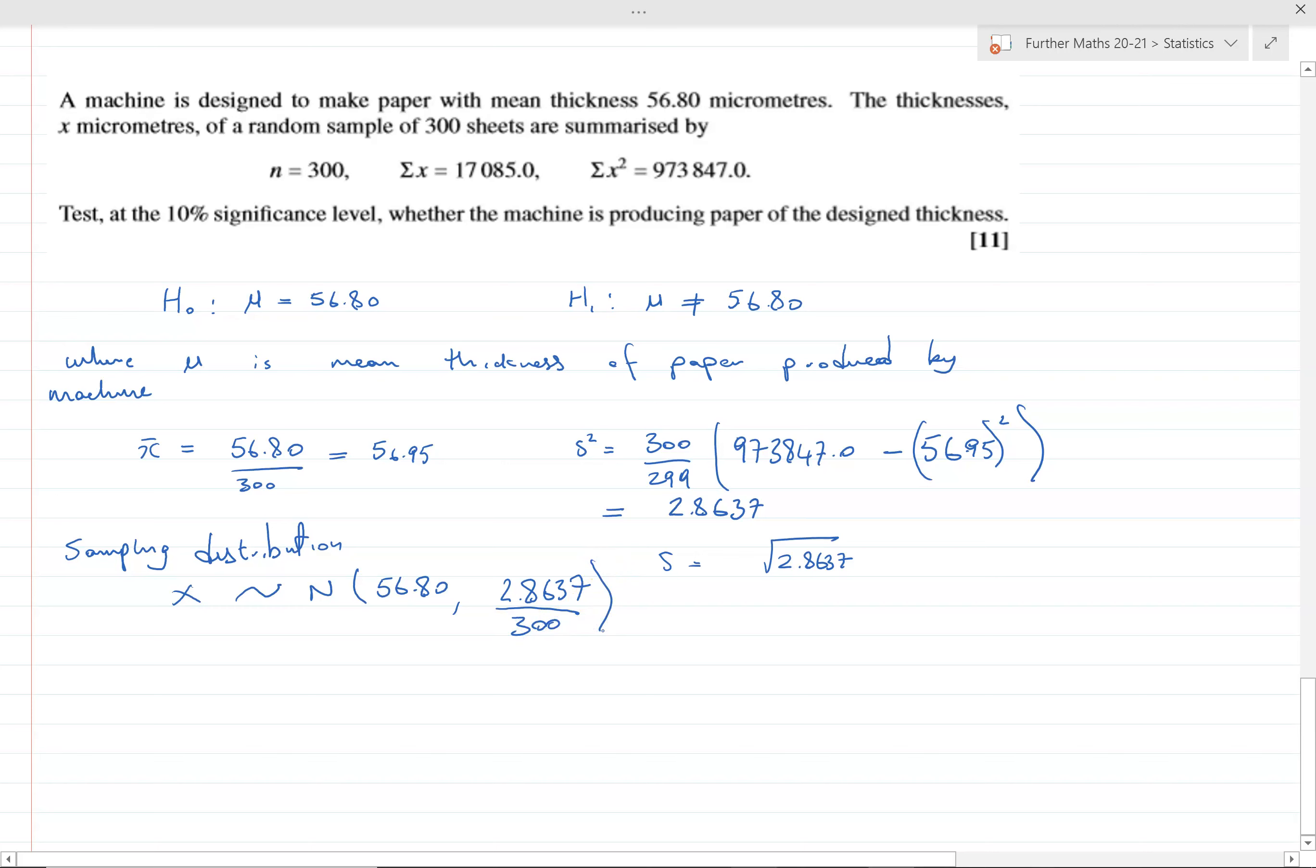That's our variance, not our standard deviation or standard error. The standard error is the square root of the standard deviation of the sampling distribution, which is √(2.8637) over √300.